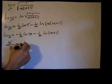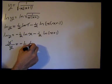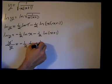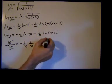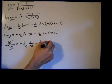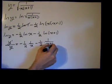Minus 1 half times 1 over x, derivative of the natural log of x, minus 1 half times the derivative of the natural log of x plus 1 is 1 over x plus 1.